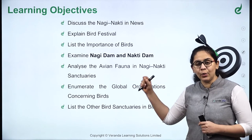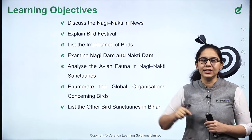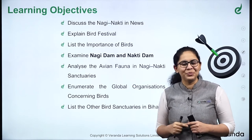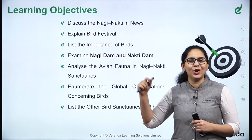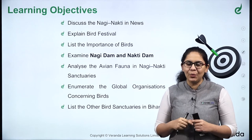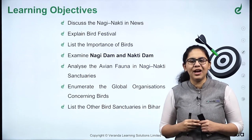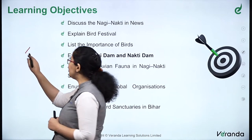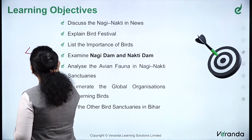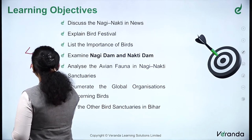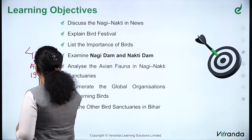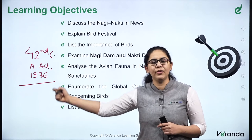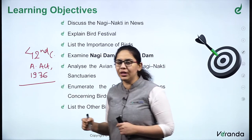It was a matter of the State List until 1976. In 1976, the mini constitution — the 42nd Constitutional Amendment Act — was operationalized. On the recommendation of the Sardar Swarn Singh Committee, the 42nd Constitutional Amendment Act brought a number of changes to the Indian Constitution. One such change was the moving of this topic from the State List to the Concurrent List.